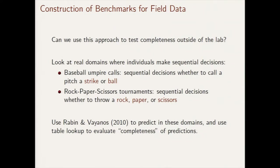So far everything has been lab data. This approach also works with field data. We found data representing instantiations of the same problem in environments where people make real decisions with real stakes. The first is baseball umpire calls: an important role of umpires is to judge whether pitches are strikes or balls when the batter does not swing. We have sequential decisions made by umpires. The second setting is rock-paper-scissors tournaments, where individuals make sequential decisions about what to throw. In both settings, we can test existing models and construct a lookup table benchmark.